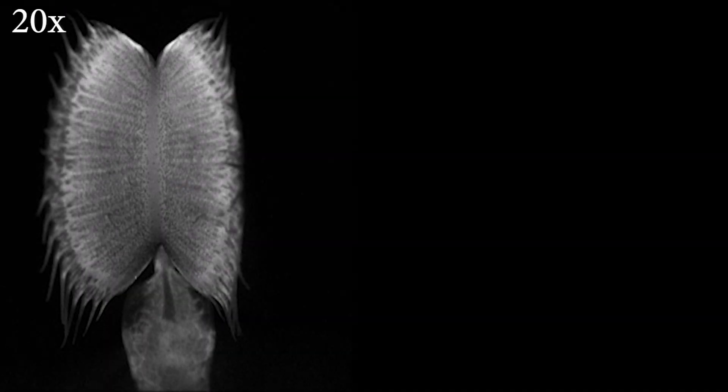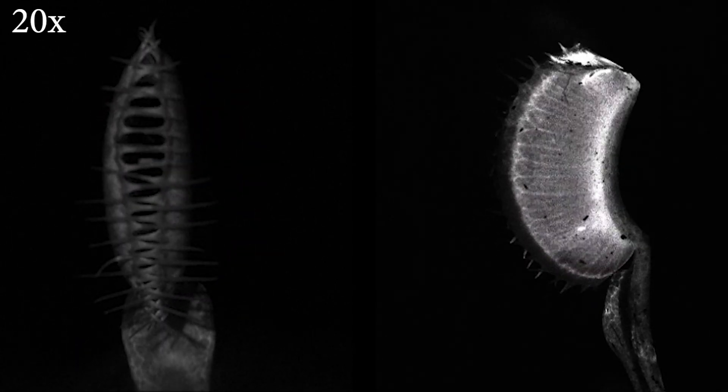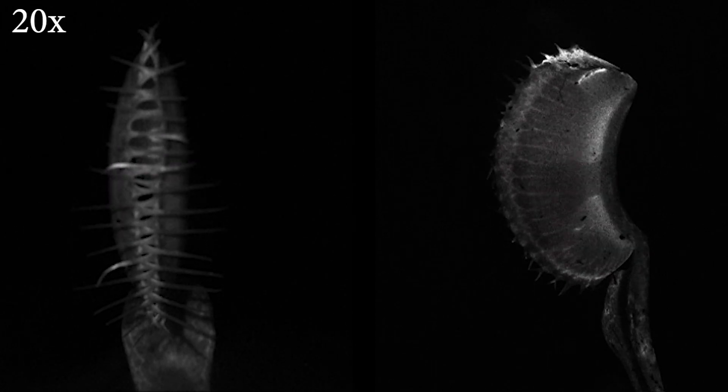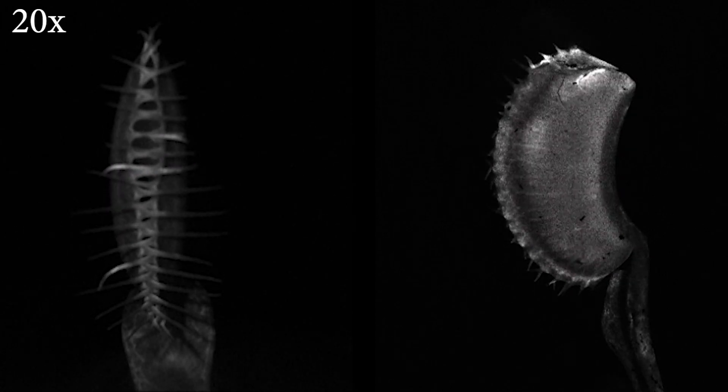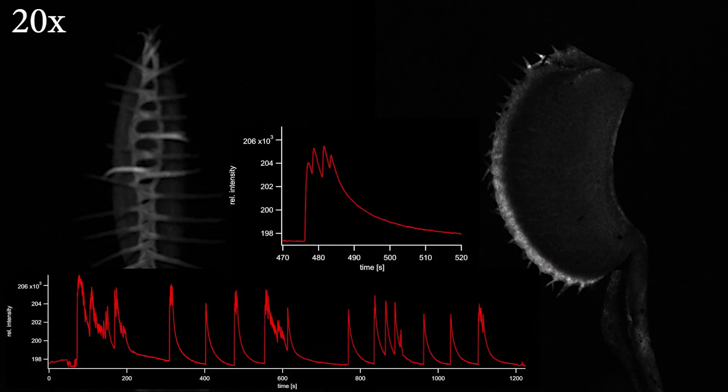Having learned how the trigger hair responds to stimulation by the experimenter, we wondered how the calcium-based alarm system recognizes real prey. When the ant collides with the trigger hair, calcium spikes are evoked and the trap snaps closed.